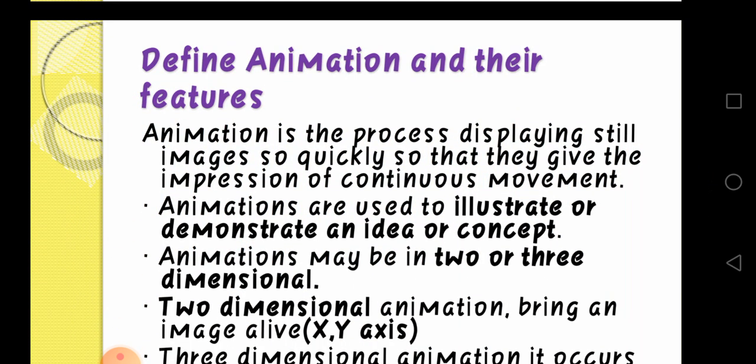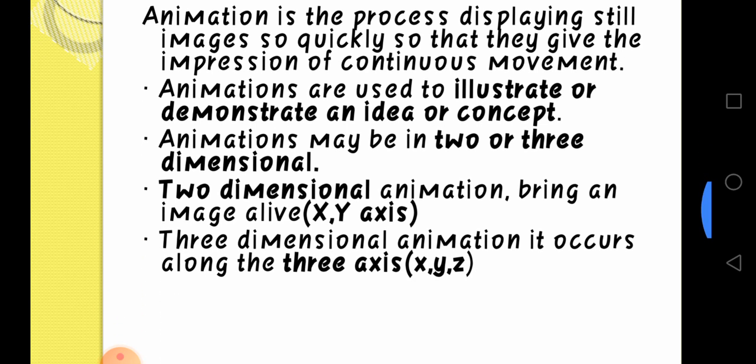Next, define animation and its features. Animation is the moving of pictures. Animation is a process of displaying still images so quickly that they give the impression of continuous movement. Animations are used to illustrate or demonstrate an idea or concept. Animation is of two types: two-dimension (2D) and three-dimension (3D). 2D uses the x and y axis, while 3D uses x, y, and z axes.